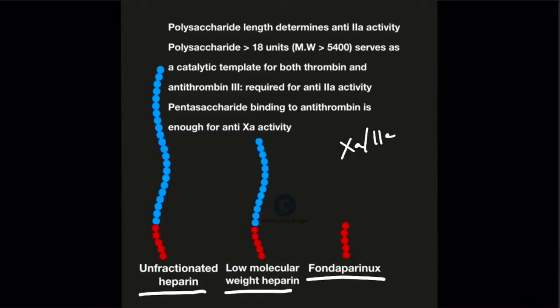Activated factor 2 is nothing but thrombin. These polysaccharides do not directly bind to the activated coagulation factors but they bind antithrombin 3 and activate the antithrombin 3. The activated antithrombin 3 inhibits the coagulation factors.